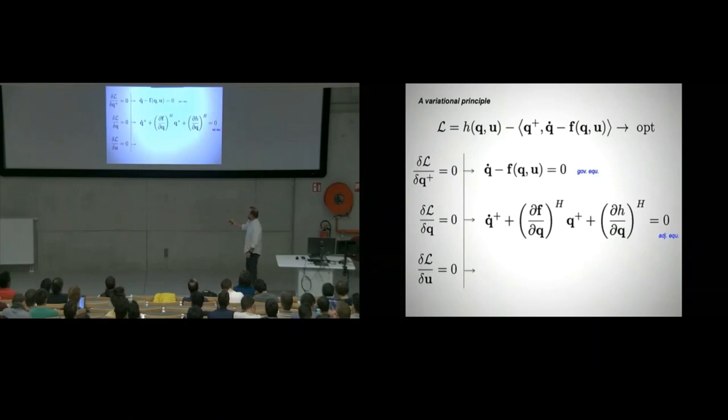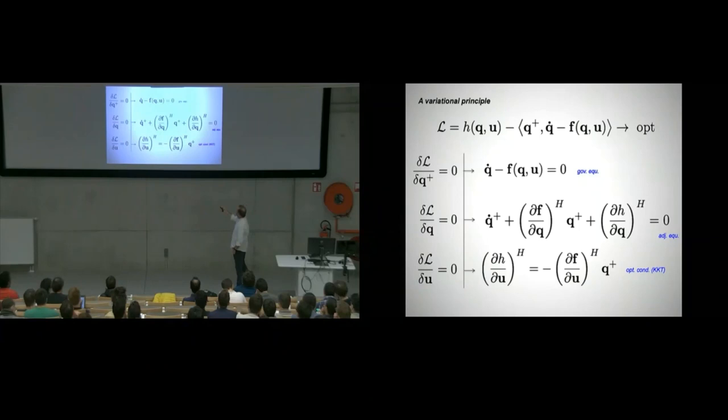Final derivative we have to take is DL/DU equals zero. U appears here, twice here in H, and it also is inside the F. It is not anywhere contributing here - that's the only one that has time derivatives. No contribution from here. That's why this last equation will not be an evolution equation. It will be an algebraic equation - no time derivative. This is how it looks like: the H/DU, which is the part from here, the F/DU is the part from here multiplied by Q plus. That one is the optimality condition. Out of satisfying these three things together to get an optimum, we have to satisfy these three equations. Two of them are evolution equations - one we knew before, and the other one is a new one that we just derived - plus one algebraic equation at the end.